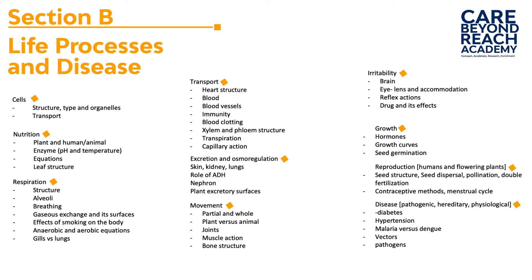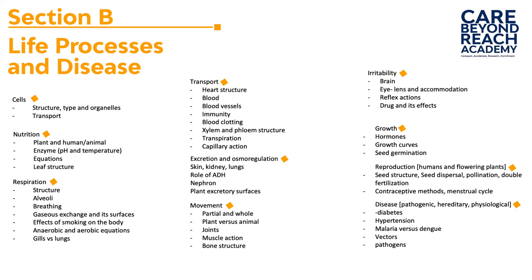You also need to look at animal nutrition, which is digestion, and the structure of the alimentary canal. After nutrition we move on to respiration, covering both aerobic and anaerobic respiration. We also look at the structure of the respiratory system and how it relates to function — the alveoli and gaseous exchange surfaces in fish and humans, taking into account gills and lungs, and how gases get across those gaseous exchange surfaces.